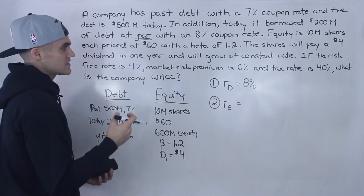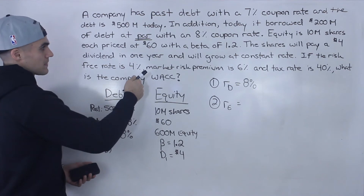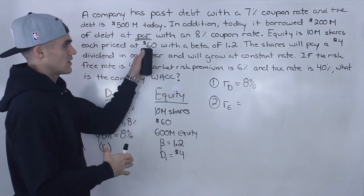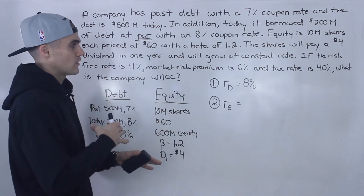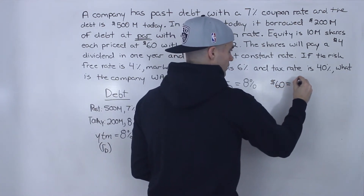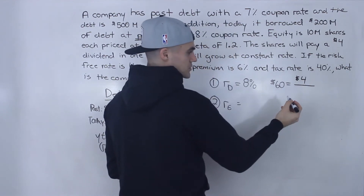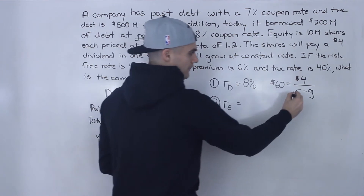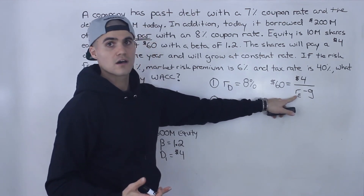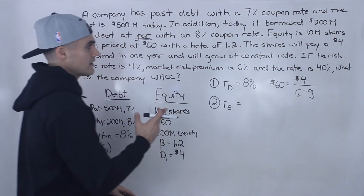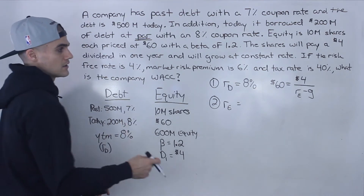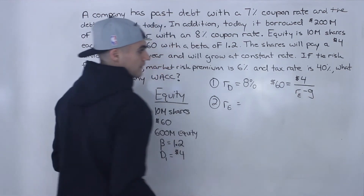However, the information about the dividends is not fully complete, because we're told dividends are going to grow at a constant rate but we're not told the growth rate. With the Dividend Discount Model, the price of the share — $60 — equals the present value of all future dividends, so $60 equals the $4 dividend in one year divided by (r minus g). But notice we don't have the growth rate, so we can't find the cost of equity with the Dividend Discount Model.